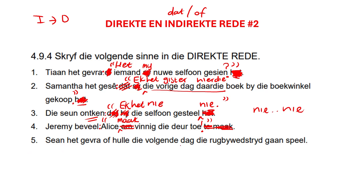Sean het gevra of hulle die volgende dag direk by wetstraat gaan speel. Sean het gevra — I put my colon. Remember, 'dat' or 'of' is part of indirekte rede, so I remove it completely. Open quotation — where is my verb? At the end, and I don't want it there. So we take it out and place it at the front. Remember, when it's a question, I usually always start with the verb. So: Gaan — 'hulle' needs to change to 'julle', and 'die volgende dag' changes to 'môre'. Sean het gevra: Gaan julle môre direk by wetstraat speel? Question mark. Then I close my quotation.